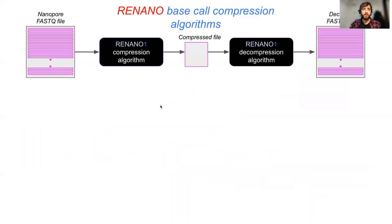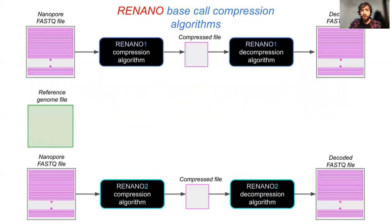For ReNano, we propose two different variants of reference-based compression. ReNano 1, where the reference is available without cost to both the compressor and the decompressor. ReNano 2, where the reference is not available to the decompressor, and instead, a compacted version of the reference is stored as part of the compressed output, thus hindering compression performance, but in turn making the decompression process reference-free.